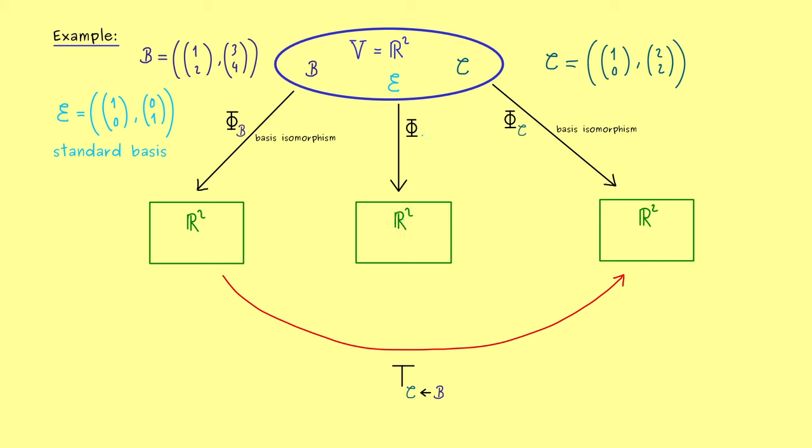Therefore, our basis isomorphism in this case does not change anything. So phi_E is simply given by the identity map. And exactly this fact implies that we have two very simple transformation matrices here. And please note, the first one here sends B to E, and the second one here sends E to C. And in addition, the composition of both matrices here is exactly our T_CB. And exactly with this matrix product, we want to calculate this transformation matrix.